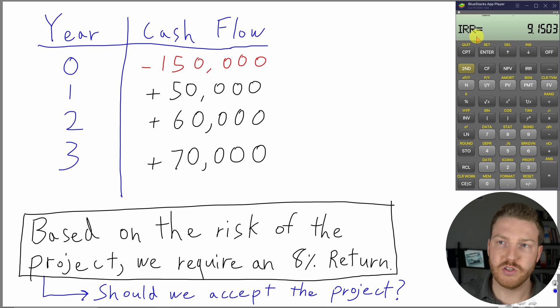And so that tells us that our internal rate of return is 9.15% for this project. Because 9.15% is higher than the return that we demand based on the risk of the project, again, we should accept this project based on the IRR rule.